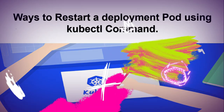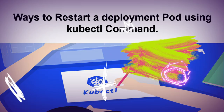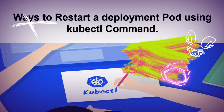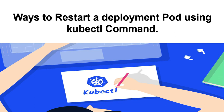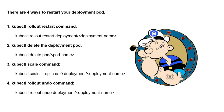Hi everyone, this is Natraj, welcome back to the Cloud Root channel. Today I'm going to talk about the ways to restart a deployment pod using kubectl commands. There are four ways to restart your deployment pod. The first one is kubectl rollout restart — this command will restart the pod managed by the deployment.